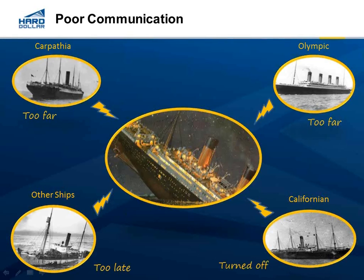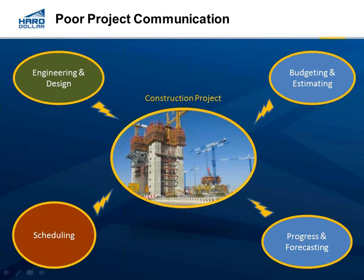If we take a look at project management, we have the same kind of issues that can cause a project to sink. You have poor project communication between the different areas of project management — scope development, engineering and design, budgeting and estimating, scheduling, progress, and forecasting. All of these elements need to communicate well with each other, otherwise we're going to end up with problems. The most recent publications put the percentage of overrunning projects at 60% to 75% — three quarters of projects are going over budget and over schedule.